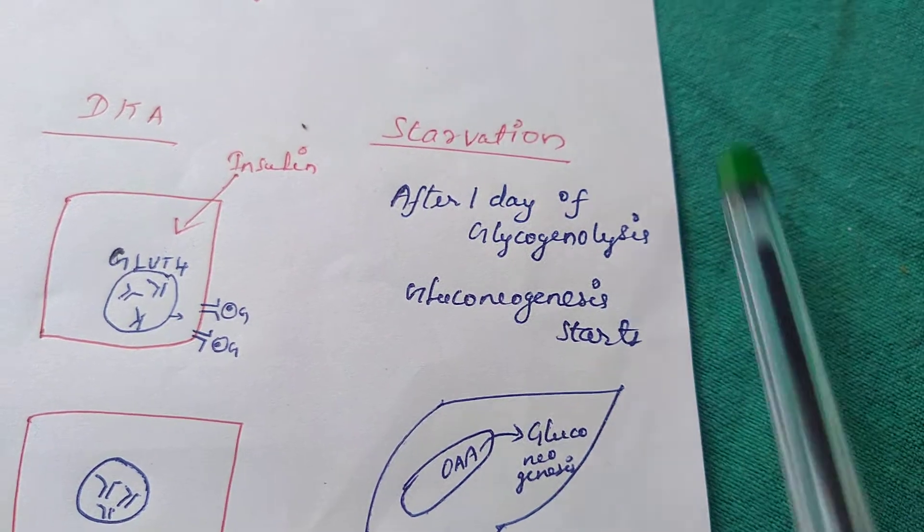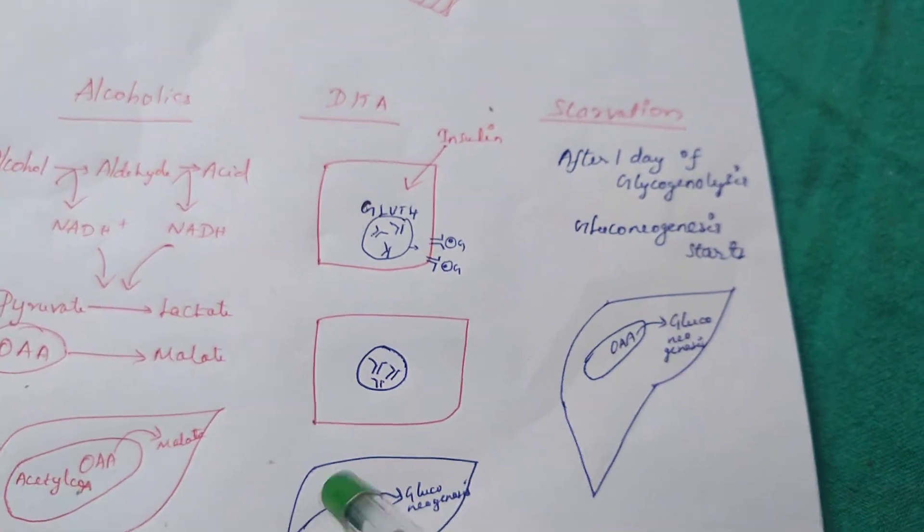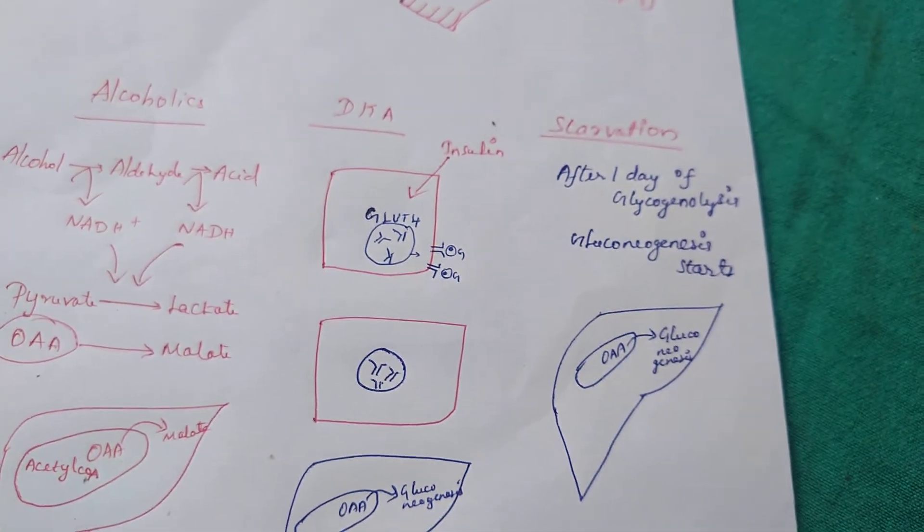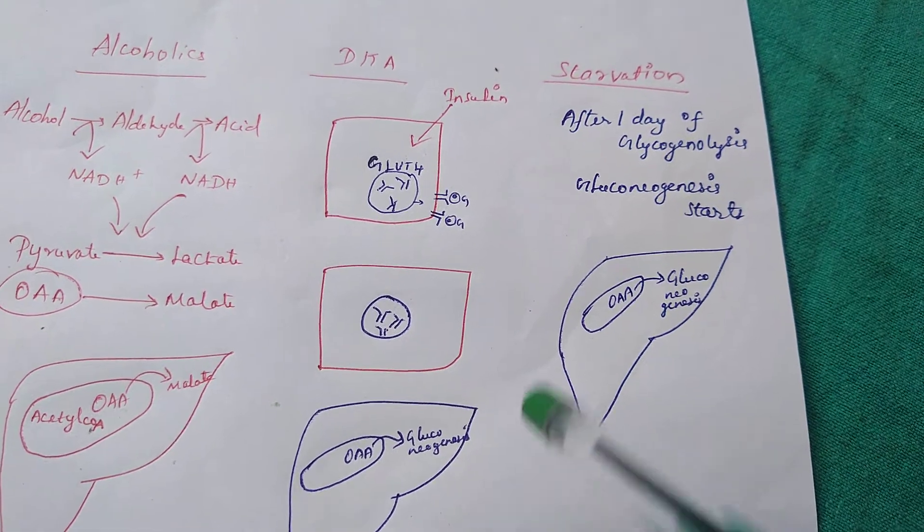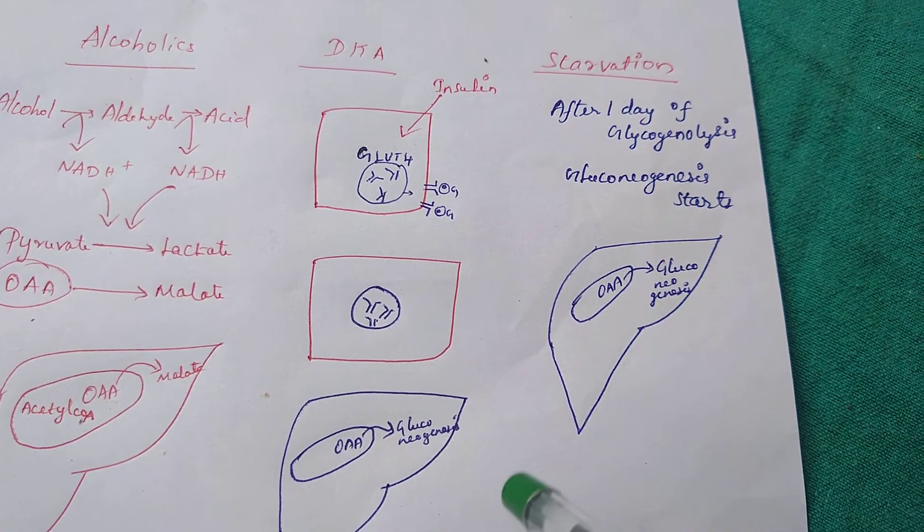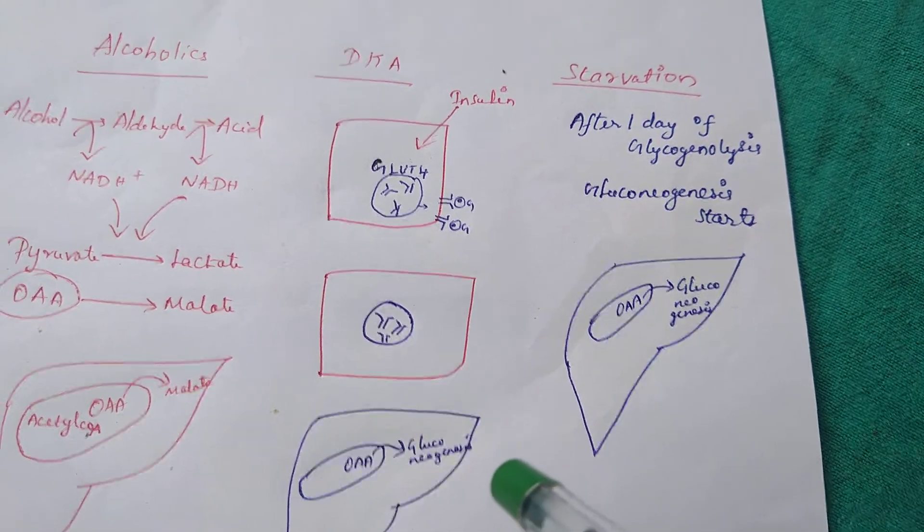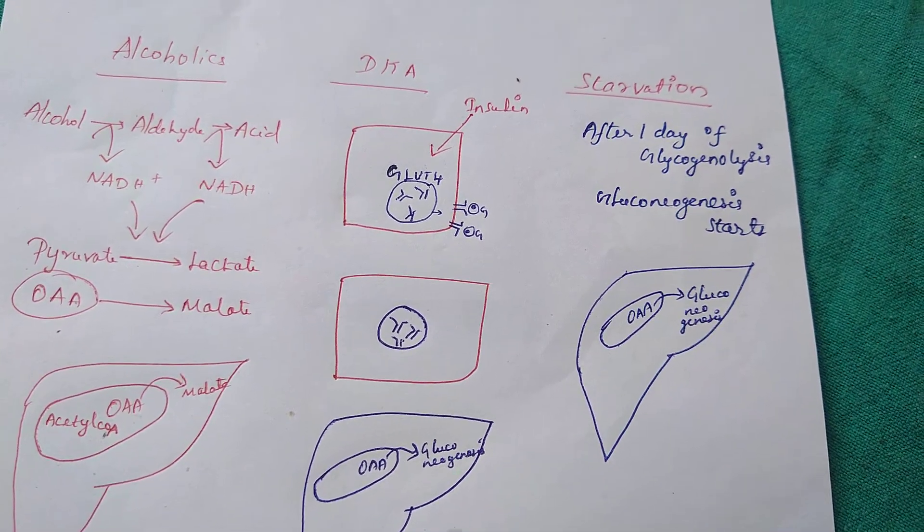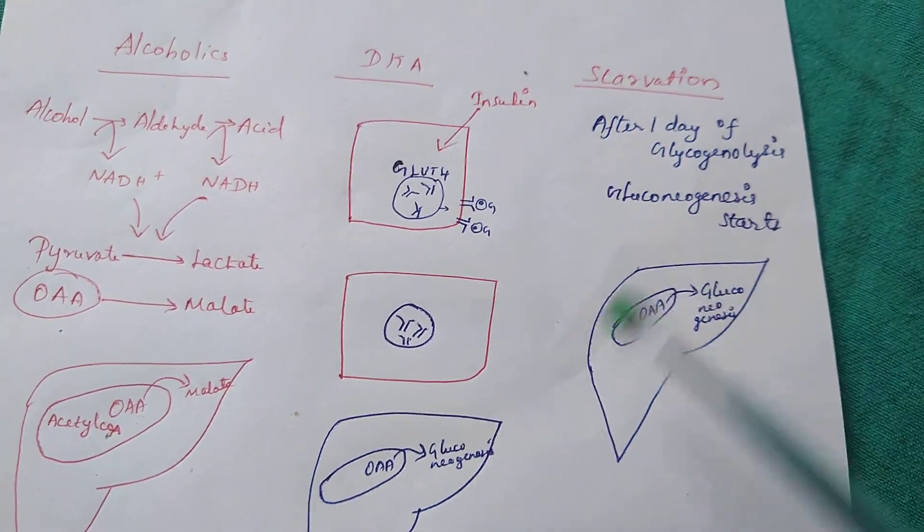Carry home messages: acetone is a gas that we cannot utilize and will be expired. Ketone bodies are utilized by our peripheral muscles and adipose tissue. Even our brain utilizes them for energy in starving states. So kindly consider all these conditions if you see ketone bodies in urine. Thank you.